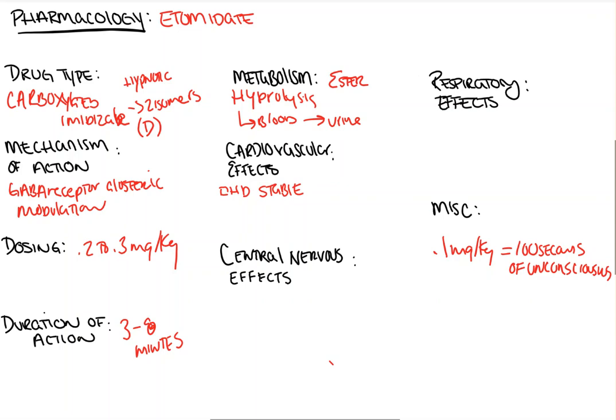Unlike propofol, which can act as a direct cardiac depressant, etomidate has no inotropic effects. This is why you will commonly see etomidate used for patients who are hypotensive, unstable, or have major bleeding — really any patient where you may be afraid of major swings in their blood pressure, especially on induction, such as cardiac patients where you don't want major changes in blood pressure or heart rate.